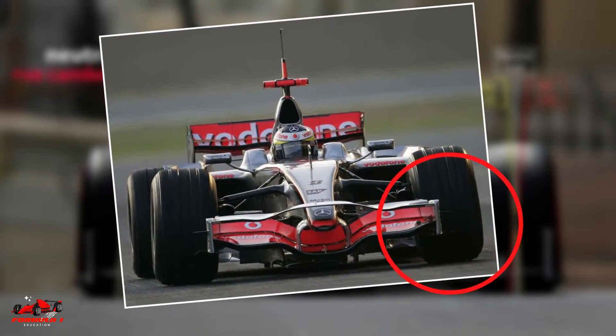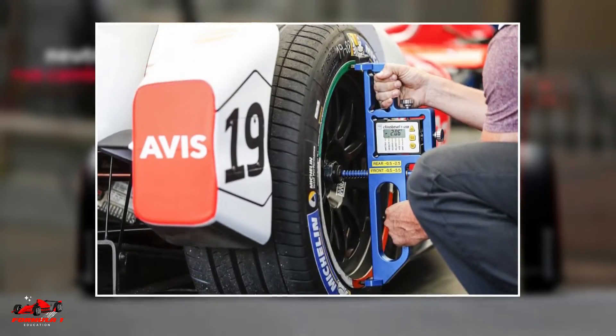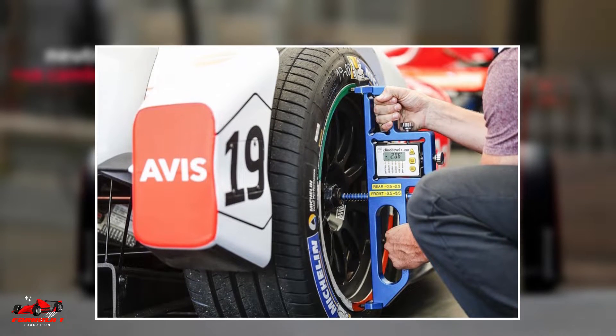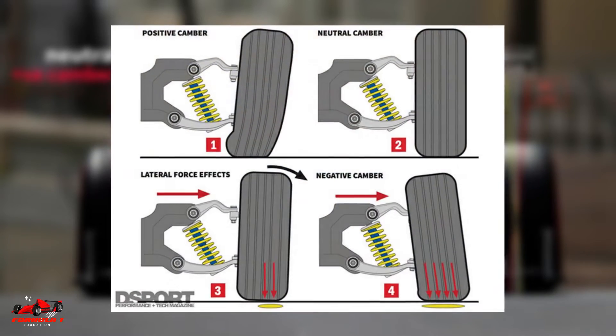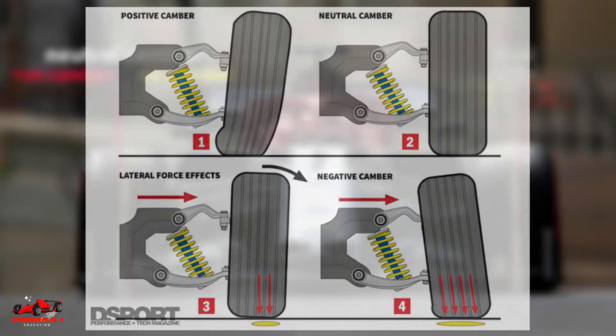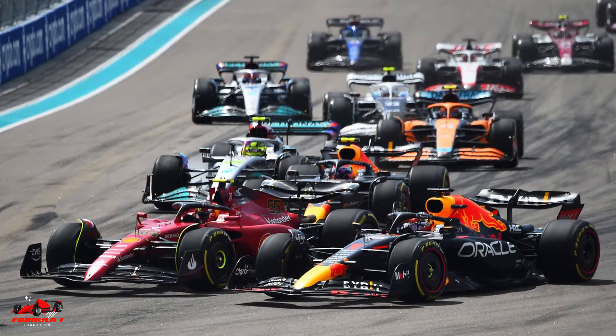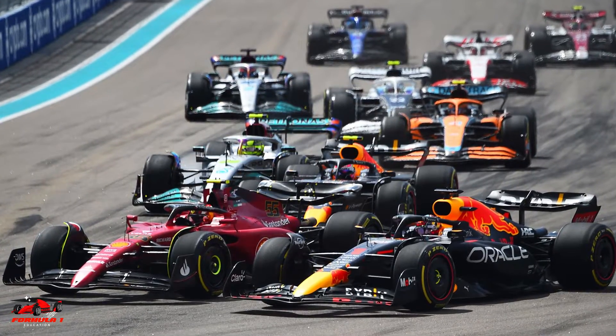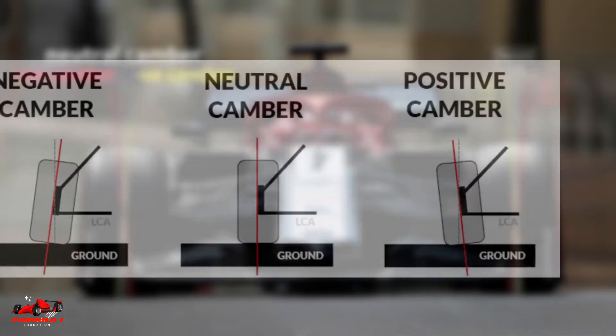With this negative camber setup, the contact patch between the road and the tire is maximized when cornering. The pressure which naturally occurs on the outside of the tire is neutralized by the inward tilt.